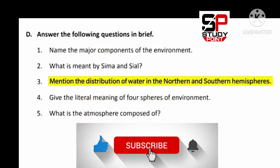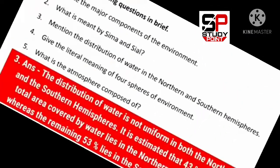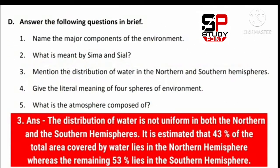Question number three: Mention the distribution of water in the northern and southern hemispheres. The answer is the distribution of water is not uniform in both hemispheres. It is estimated that 43 percent of the total area covered by water lies in the northern hemisphere, whereas the remaining 57 percent lies in the southern hemisphere.